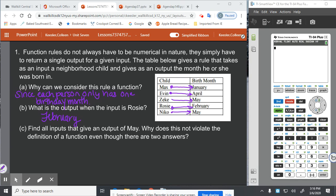Then it says, find all inputs that give an output of May. So Zeke is May, and so is Nico. And why does this not violate the definition of a function, even though there are two answers?